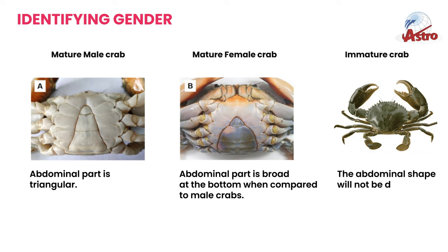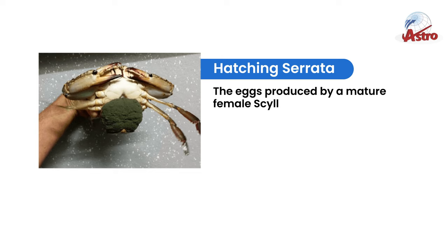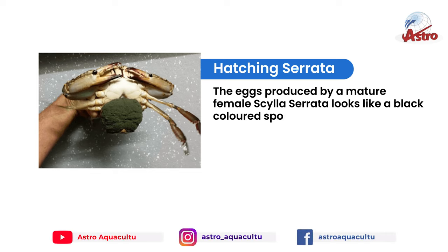For immature crabs, the abdominal shape will not be developed properly and it is difficult to identify gender. The picture shown here is of eggs produced by a mature female Scylla serata, which look like a black-colored sponge that is ready to hatch imminently.